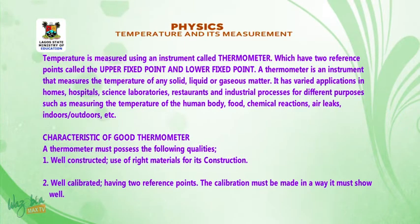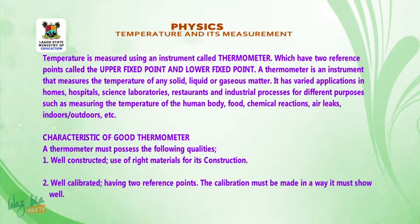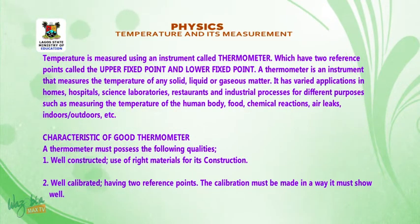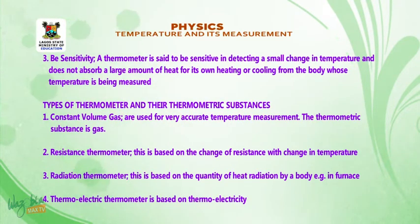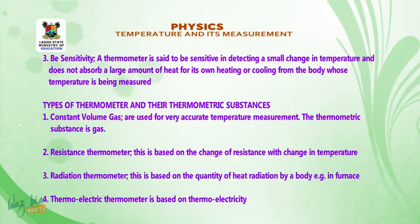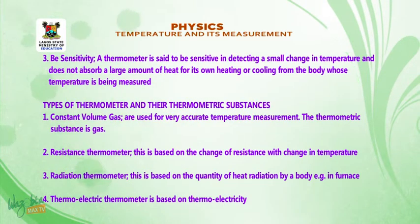Characteristics of a good thermometer: a thermometer must possess the following qualities. 1. Well constructed — use of the right materials for its construction. 2. Well calibrated — having two reference points, with the calibration made clearly. 3. Sensitive — a thermometer is said to be sensitive if it detects small changes in temperature and does not absorb a large amount of heat from the body being measured.